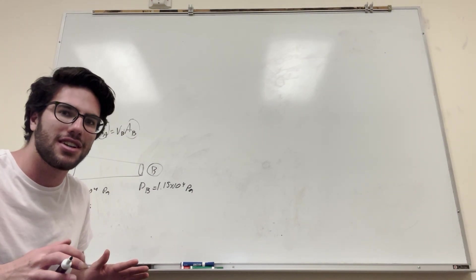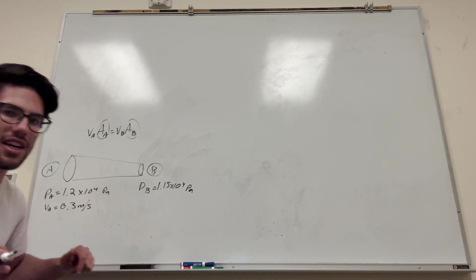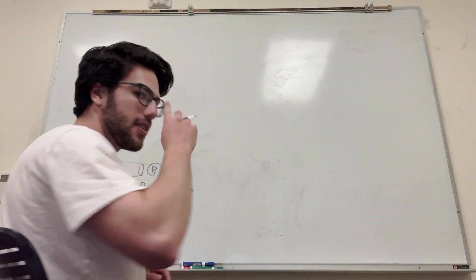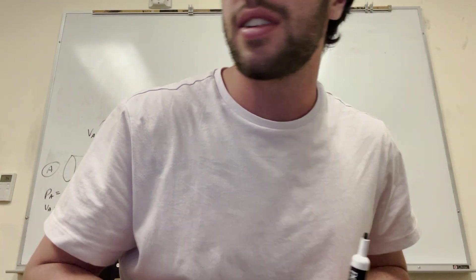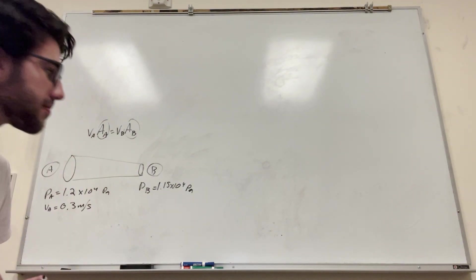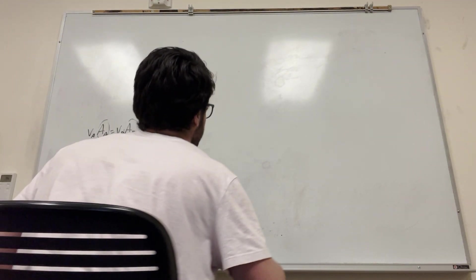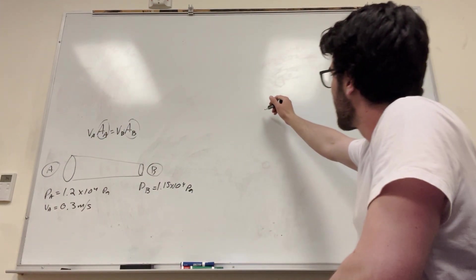We're going to use Bernoulli's equation. That's the equation that can relate pressure to velocity. So let's go ahead and do that. Do we have anything else? Oh, I think you gave us the specific gravity. Okay, that's cool. All right, let's go start with Bernoulli's equation first. Okay, we can go right up here to this line.